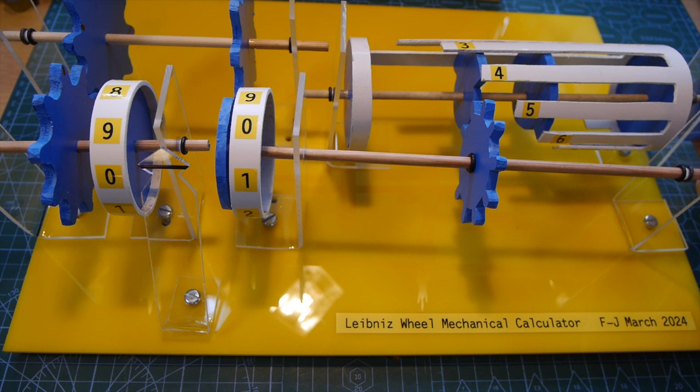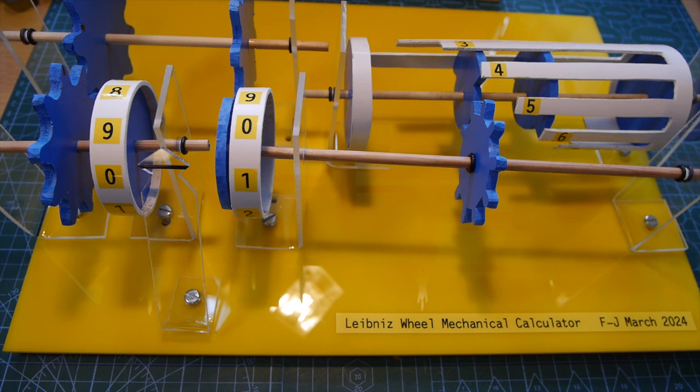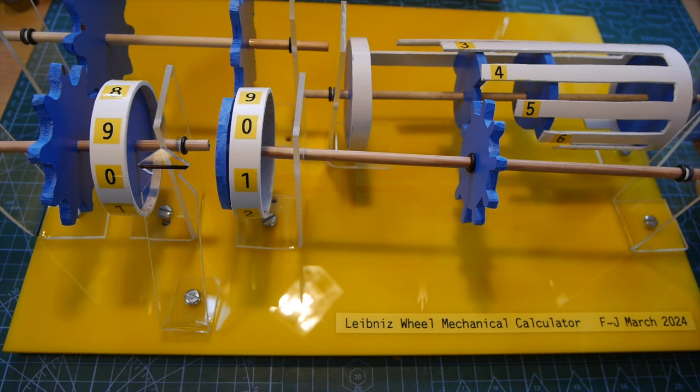And the number of turns will be how many threes go into 19, the quotient, with what's left on the number drums being the remainder. In this case six whole rotations with a remainder of one.